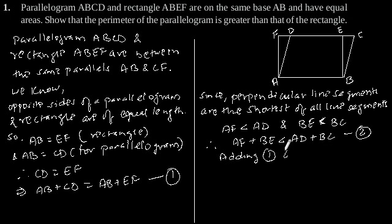Now adding equation 1 and equation 2, we will get AF plus BE plus AB plus EF is smaller than AD plus BC plus AB plus CD. So this is the perimeter of the rectangle and this is the perimeter of the parallelogram.